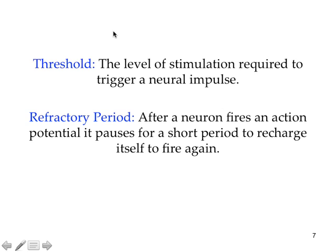The threshold is the level of stimulation required to trigger the neural impulse — everything has a minimum level of stimulation required to start it. It might be a sound, a sight, a touch, or a smell that allows neural transmission to take place. The refractory period is after a neuron fires an action potential; it pauses for a short time to recharge itself and fire again. Think of old disposable cameras — after taking a picture with a flash, you had to wait for the flash to recharge before taking another picture.